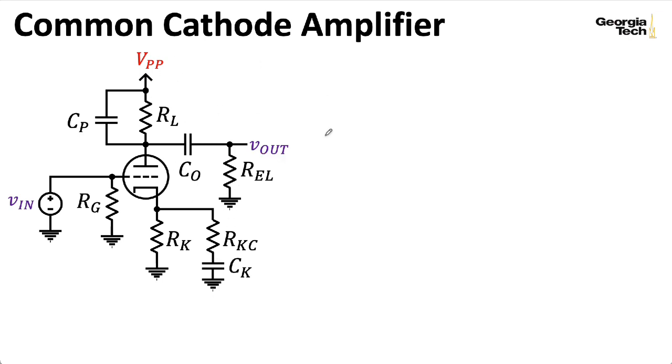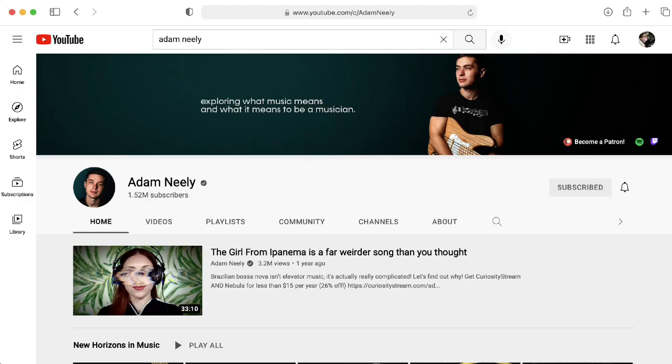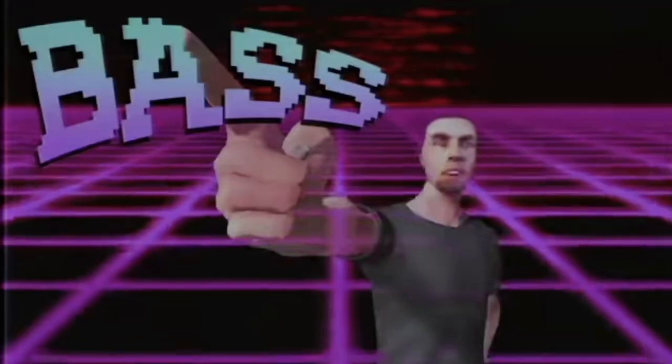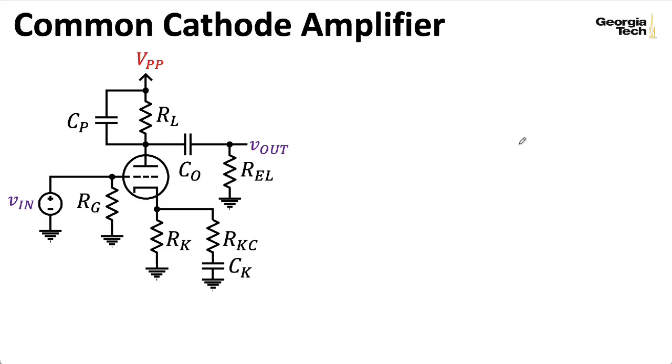Connecting this common cathode stage and whatever the next stage of the amplifier is, is a coupling capacitor that I call CO. I guess O stands for output. I don't know. I needed to call it something. I didn't want to call it CC. In this lecture, I would like to channel my inner Adam Neely and look at the response of the circuit. So let us interrogate each of these capacitors about its role.